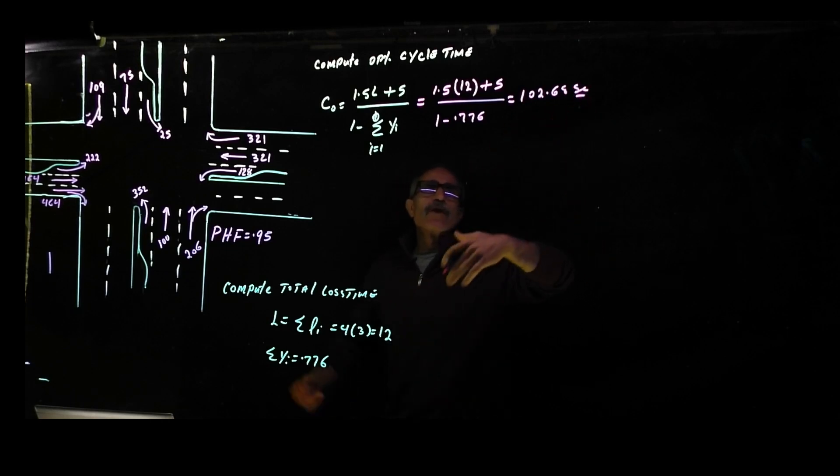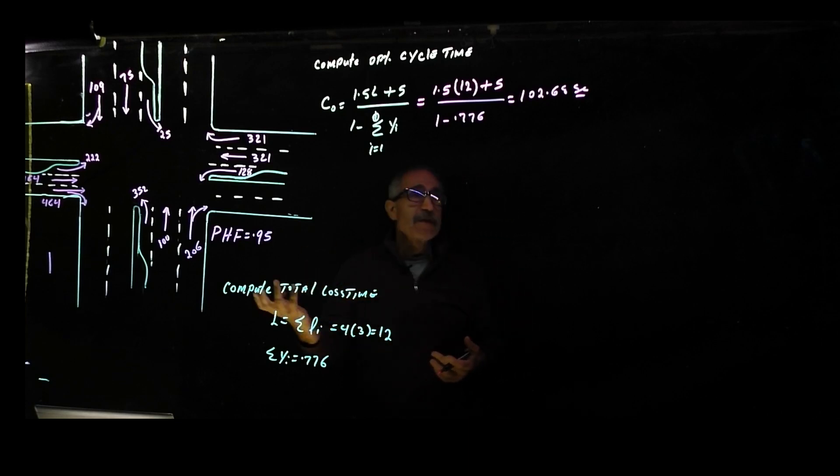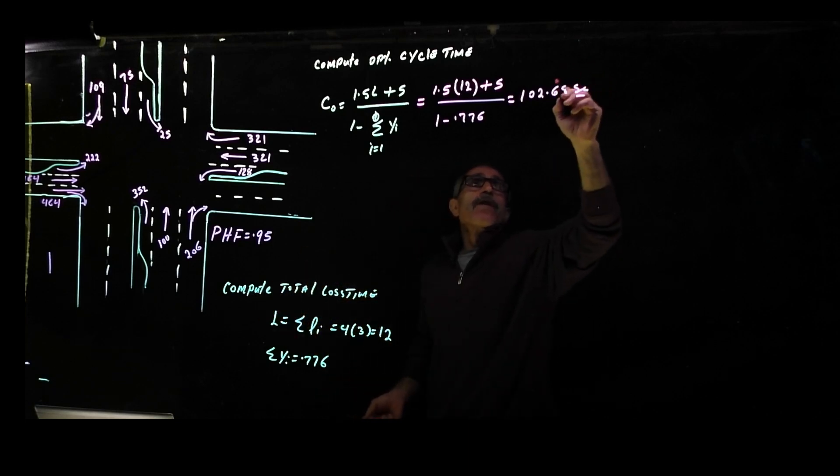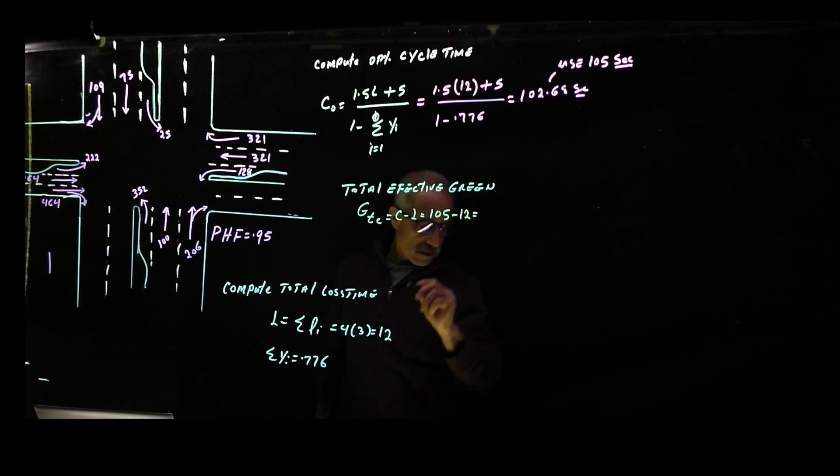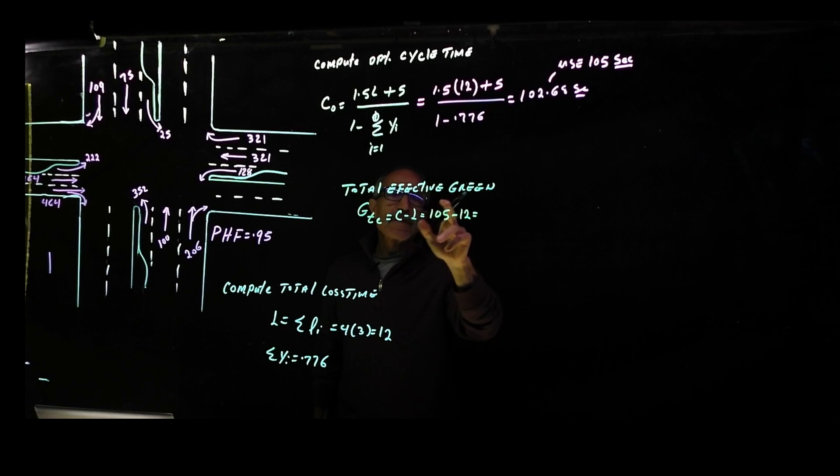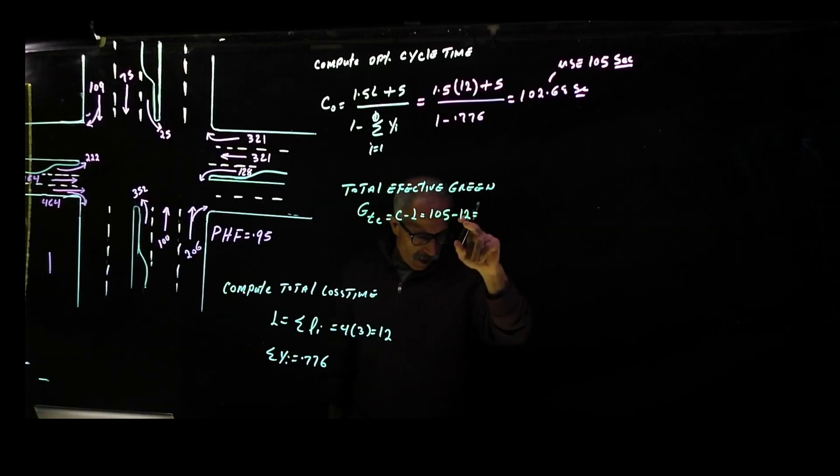Now we can use the next nearest round number to a 5, let's use 105 seconds. So our total effective green time is going to be total cycle time minus the lost time: 105 minus 12, that makes it 93 seconds.